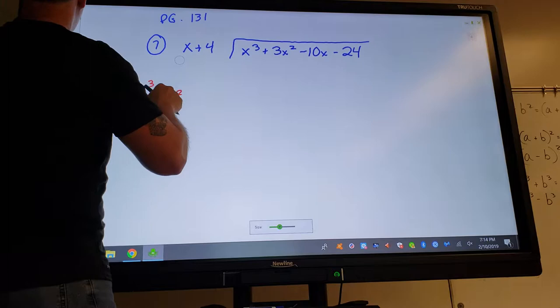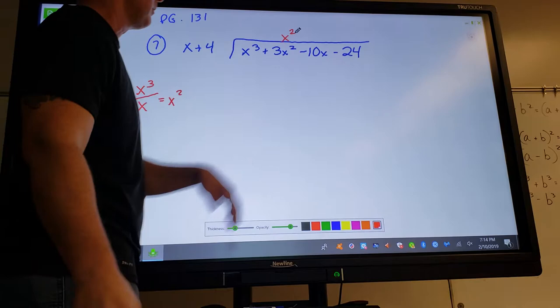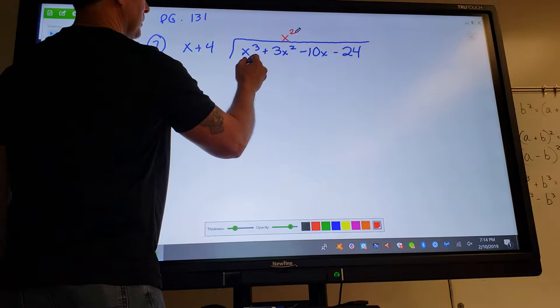If that's the case, then what do I do with that information? Simple. You simply write that x squared up on top, and I like to line my exponents up so I can see when I'm close to the end. What do I do with that x squared? I multiply it with this x plus four.